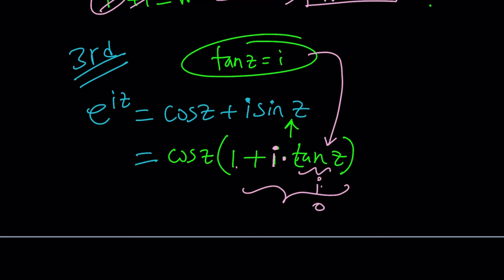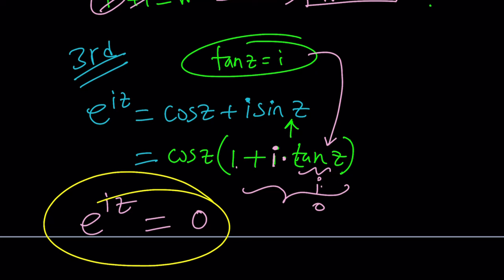Therefore this whole thing is zero. But wait, it was e to the iz. E to the iz cannot be zero. Nice. This is basically an accelerated version of the first method. Obviously the first method took a little while to build because we used identities, but if you use this formula directly and do a little bit of tangent manipulation, a little trick, you'll get the answer right away.